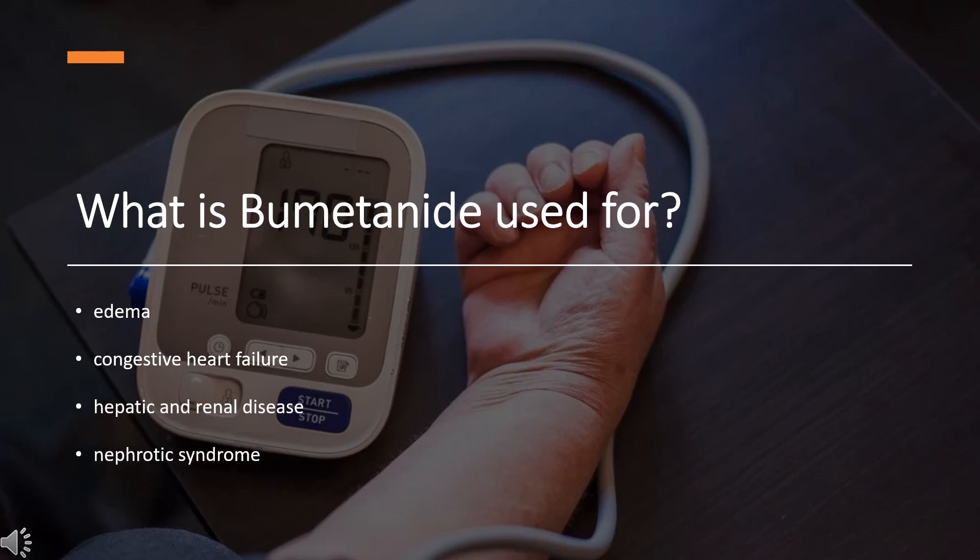What is Bumetanide used for? For the treatment of edema associated with congestive heart failure, hepatic and renal disease, including the nephrotic syndrome.